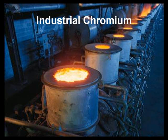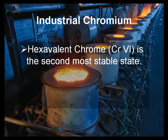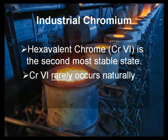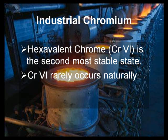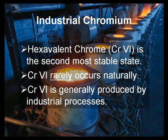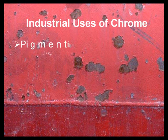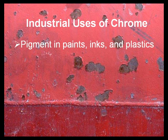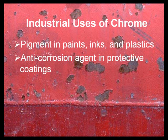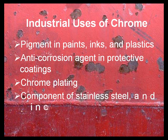Chromium is also used in many industries. Hexavalent chrome is the second most stable state of the element; Chrome-6 rarely occurs naturally and is generally produced by industrial processes. Some industrial uses of chrome include use as a pigment in paints, inks, and plastics, and as an anti-corrosion agent in protective coatings. It is used in chrome plating and is a component of both stainless steel and cement.